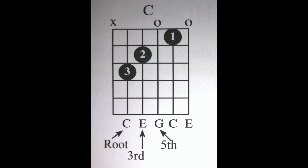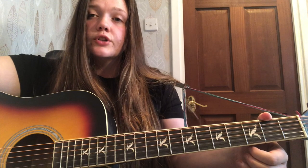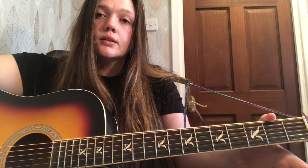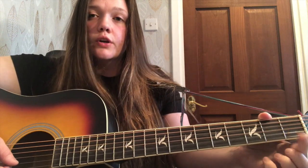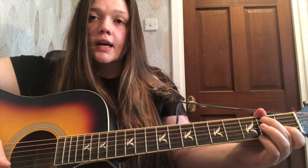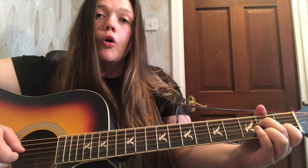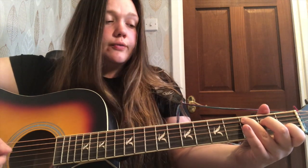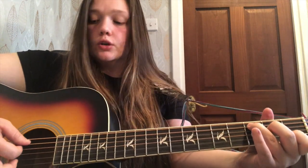The major chord consists of three notes: a root note, a third and a fifth. The note C is the first, the note E is the third, and the note G is the fifth. We can see this on the diagram. To make this chord, you would put your first finger on the first fret of the B string, your second finger on the second fret of the D string, and your third finger on the third fret of the A string. And altogether that creates your C major chord.